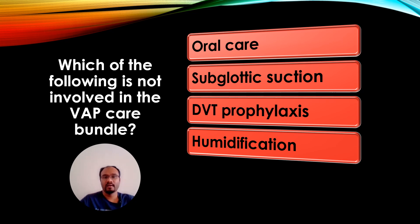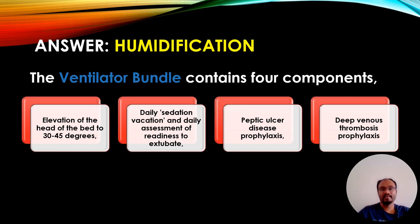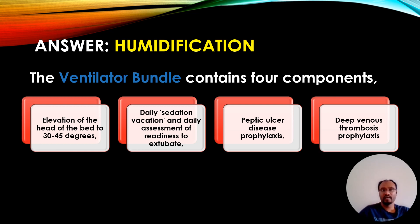The next question: Which of the following is NOT involved in the VAP care bundle? Options: oral care, subglottic suction, DVT prophylaxis, or humidification. The correct answer is humidification. The ventilator bundle contains four components: elevation of the head of the bed to 30 to 45 degrees, daily sedation vacation and daily assessment of readiness to extubate, peptic ulcer disease prophylaxis, and deep vein thrombosis prophylaxis.